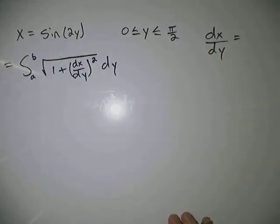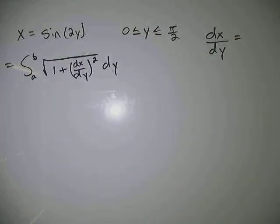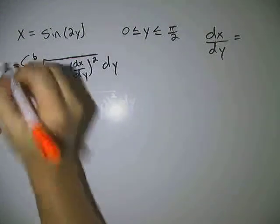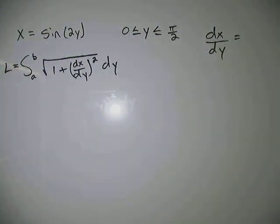So what we have here is our arc length formula, which is L equals the integral from a to b of square root 1 plus dx over dy squared dy.